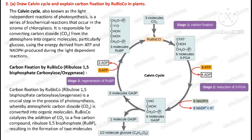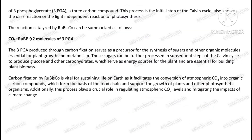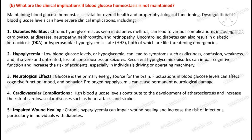Question number five, part A: Draw the Calvin cycle and explain carbon fixation. Second part of this question: What are the clinical implications if blood glucose homeostasis is not maintained?